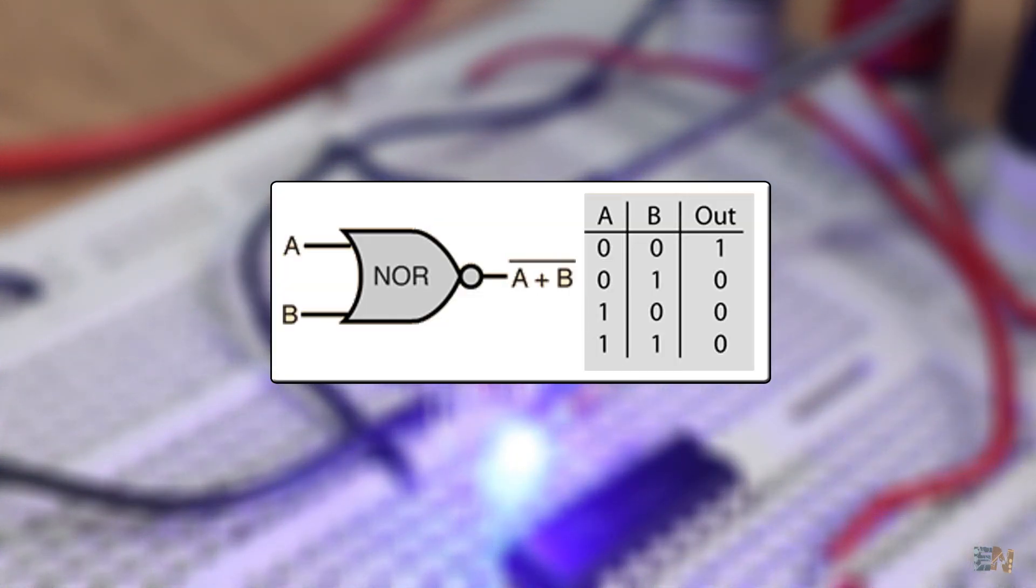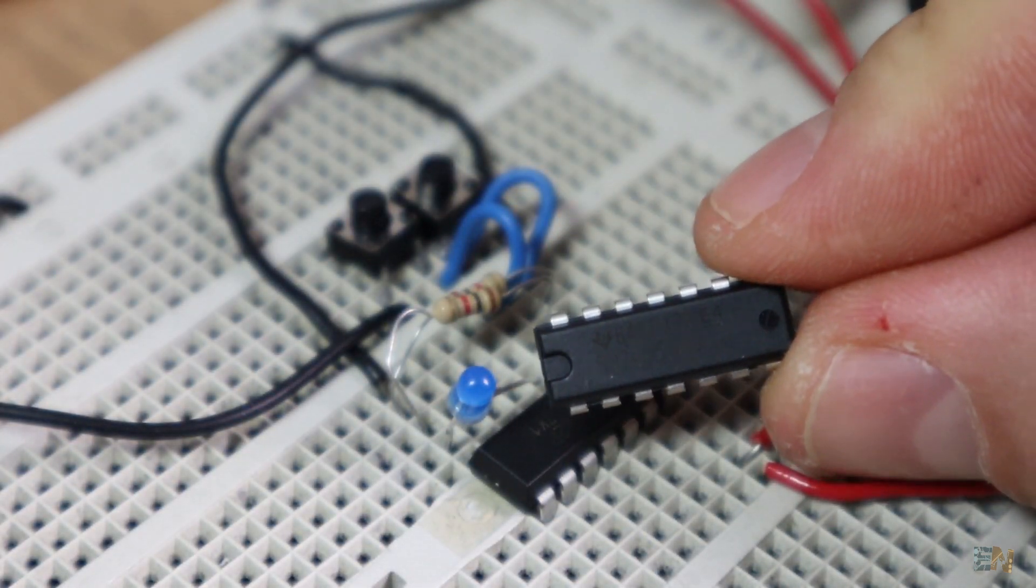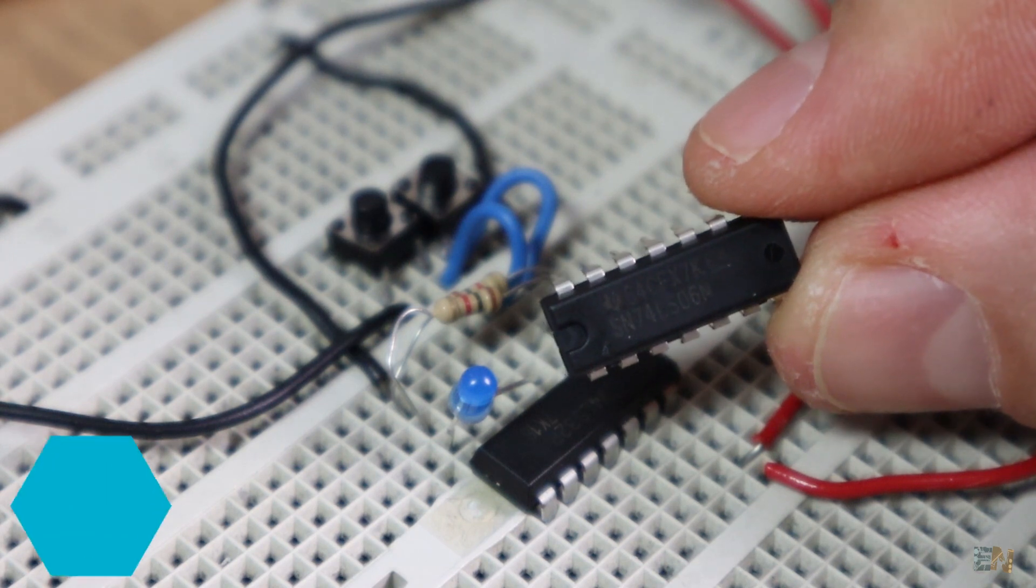Now the NOR gate is the same but with inverted output. You could create a NOR or an NAND or any inverted gate just by placing a NOT gate at the output of any gate.